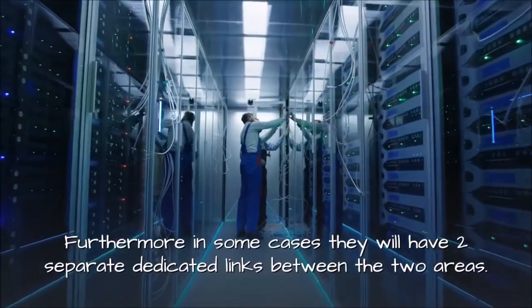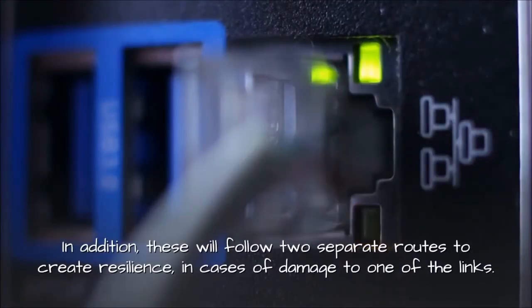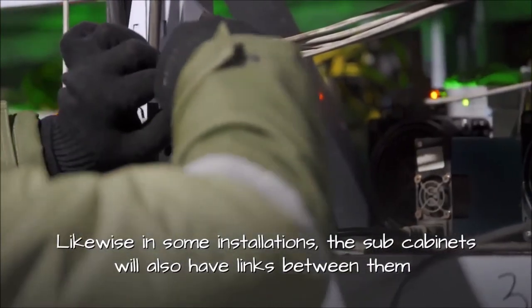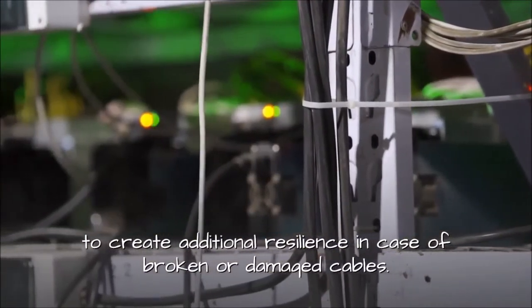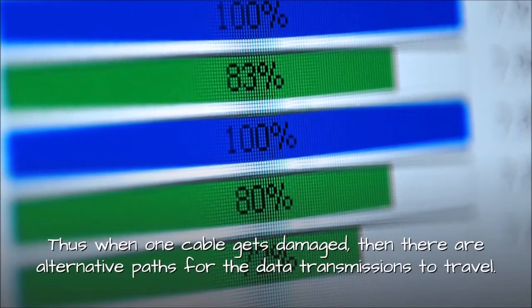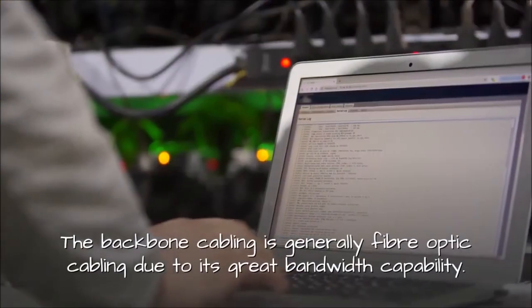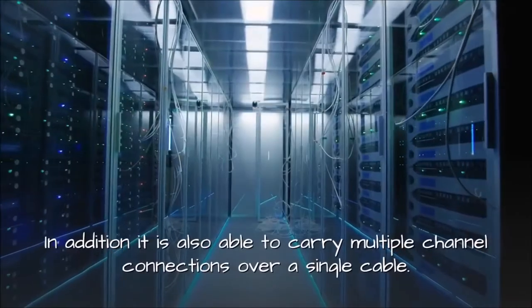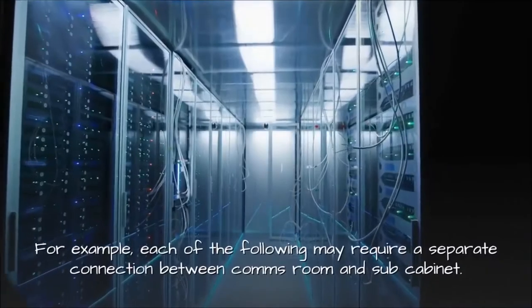Furthermore in some cases they will have two separate dedicated links between the two areas. In addition, these will follow two separate routes to create resilience, in cases of damage to one of the links. Likewise in some installations, the sub cabinets will also have links between them to create additional resilience in case of broken or damaged cables. Thus when one cable gets damaged, then there are alternative paths for the data transmissions to travel. The backbone cabling is generally fiber optic cabling due to its great bandwidth capability. In addition it is also able to carry multiple channel connections over a single cable.